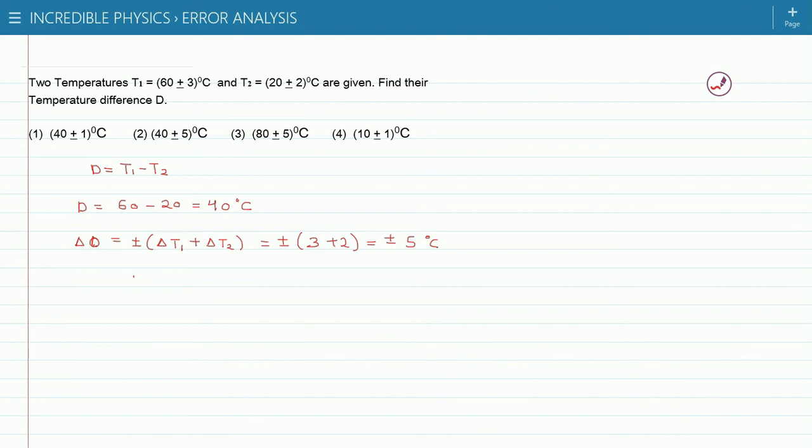Now if we want to find the complete value of quantity D, we have to place the mean value which is 40 degree Celsius plus minus error of the quantity D which is 5, and this is the complete value of the quantity D, so the second option is the correct one.